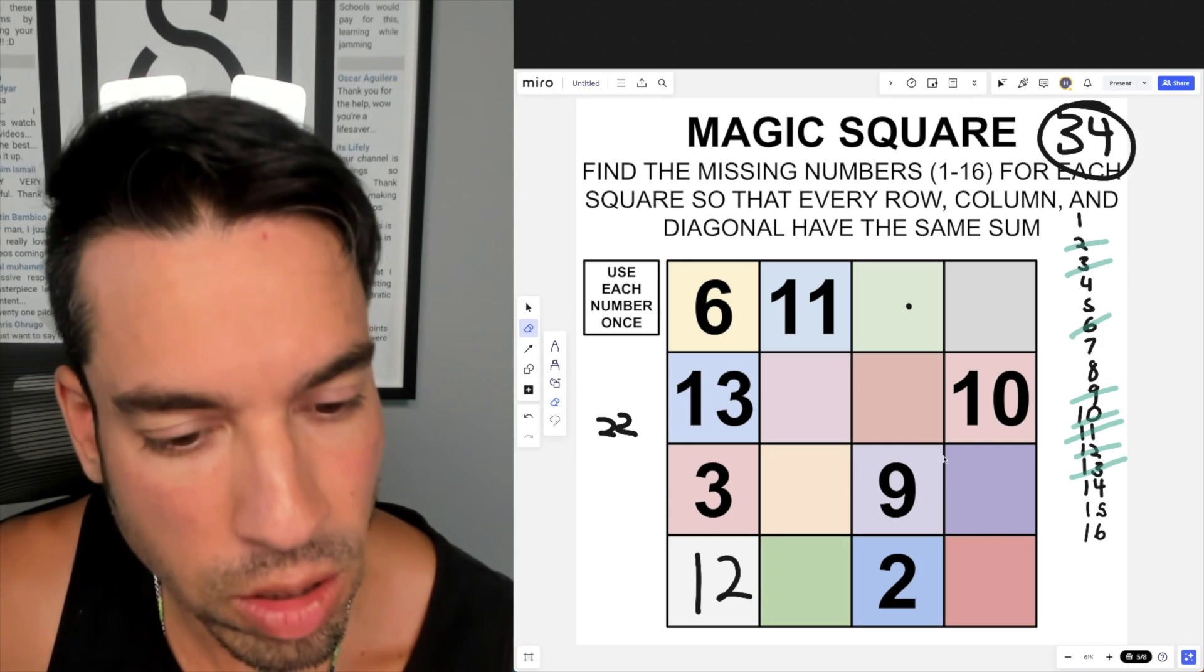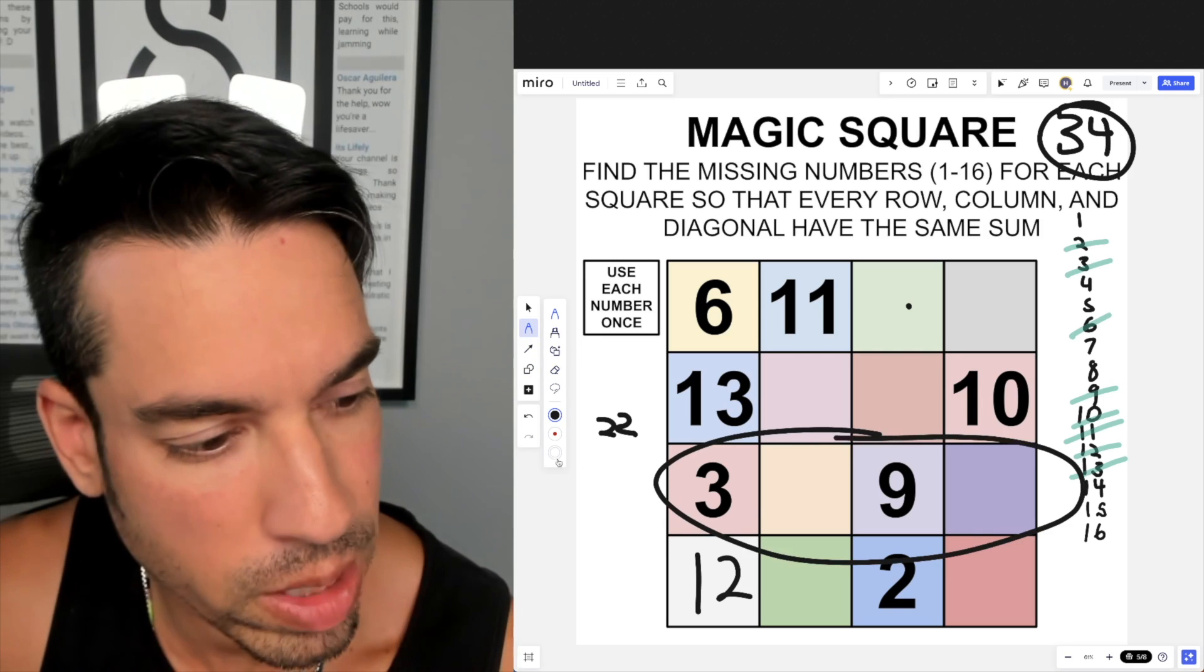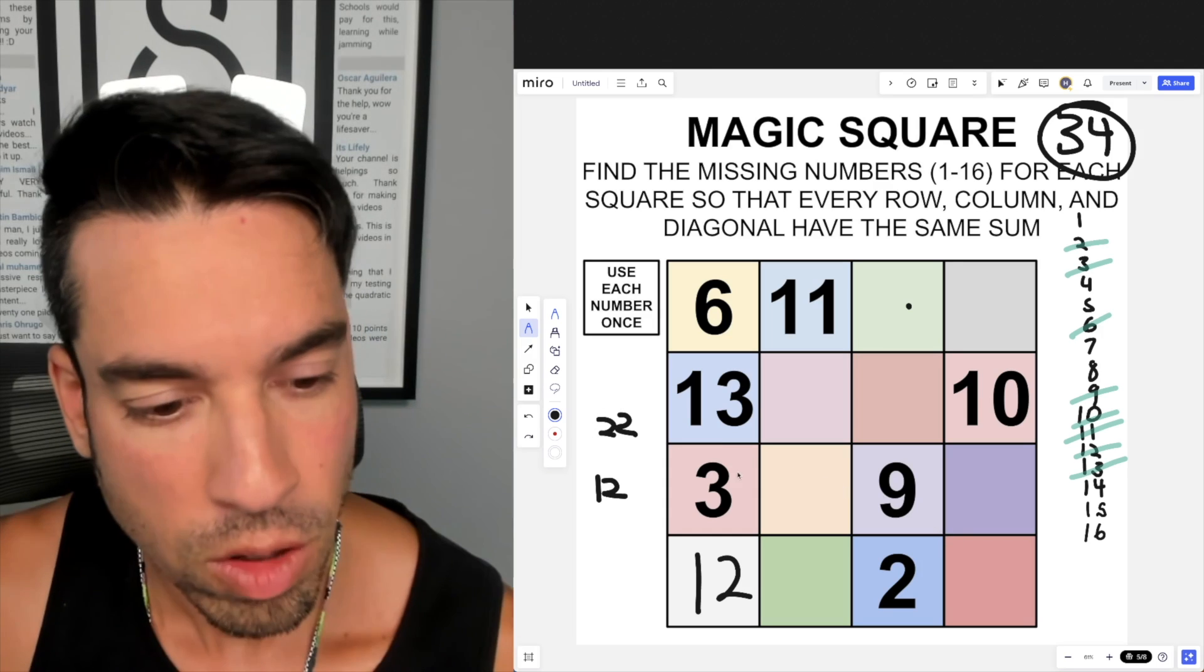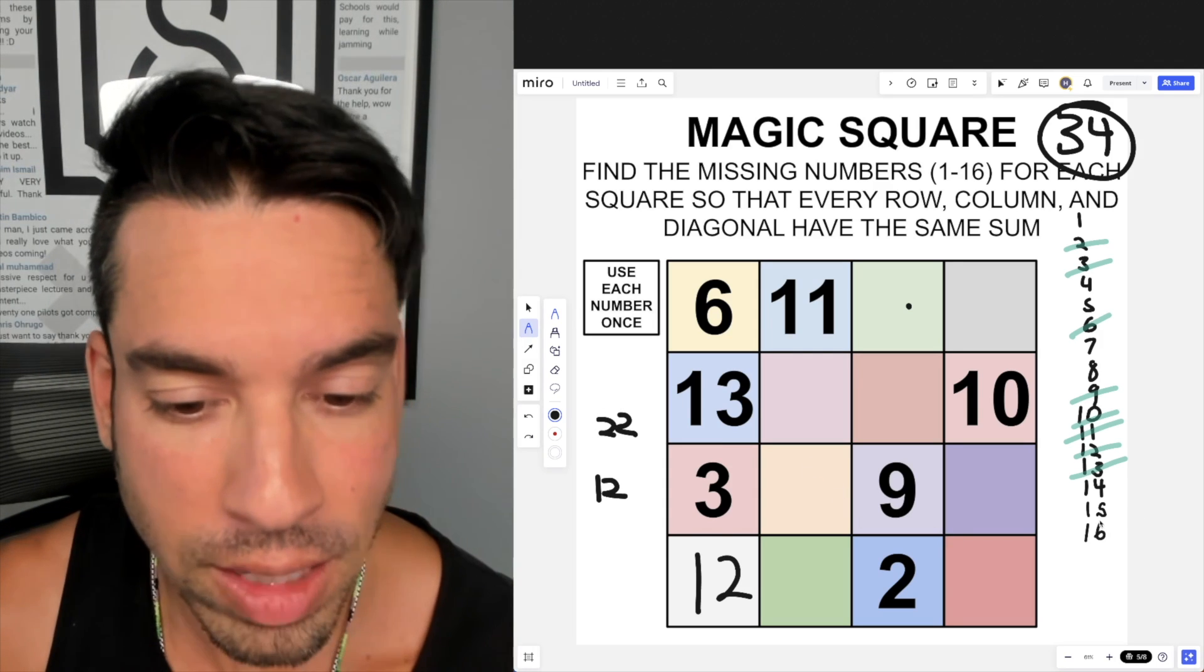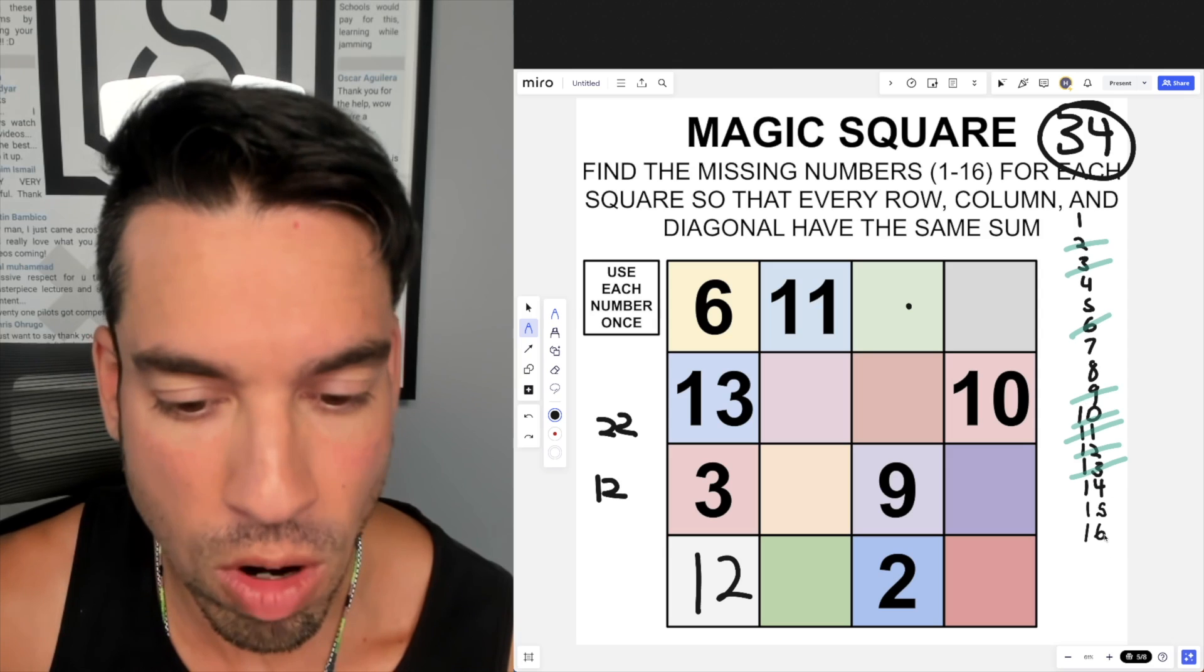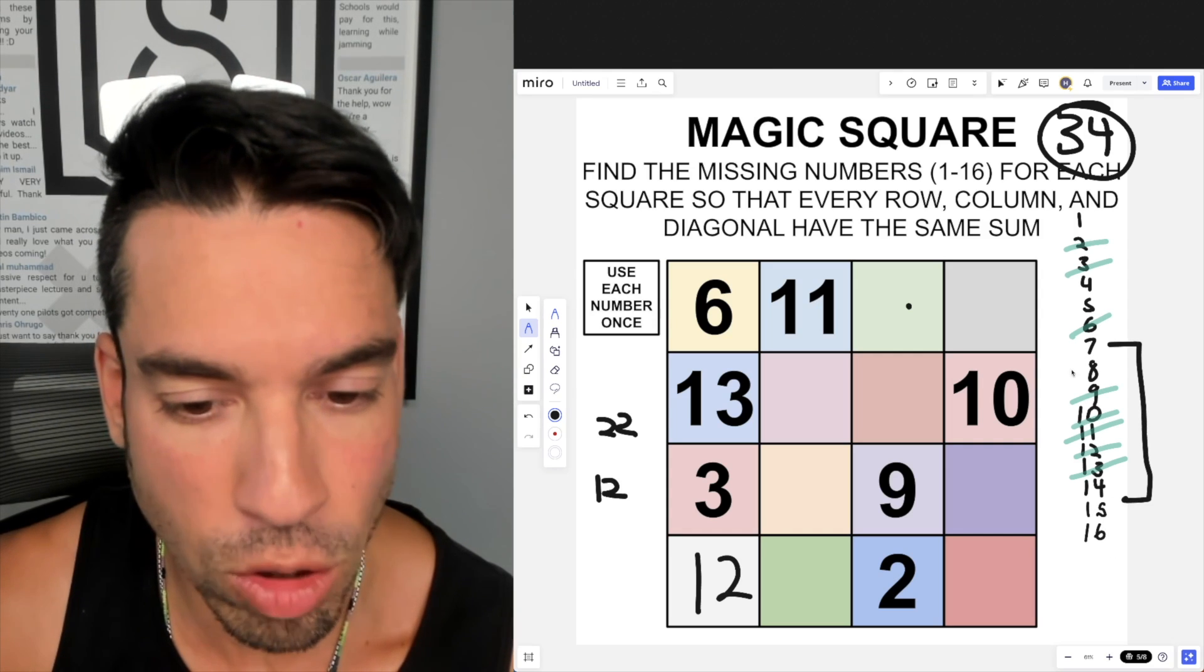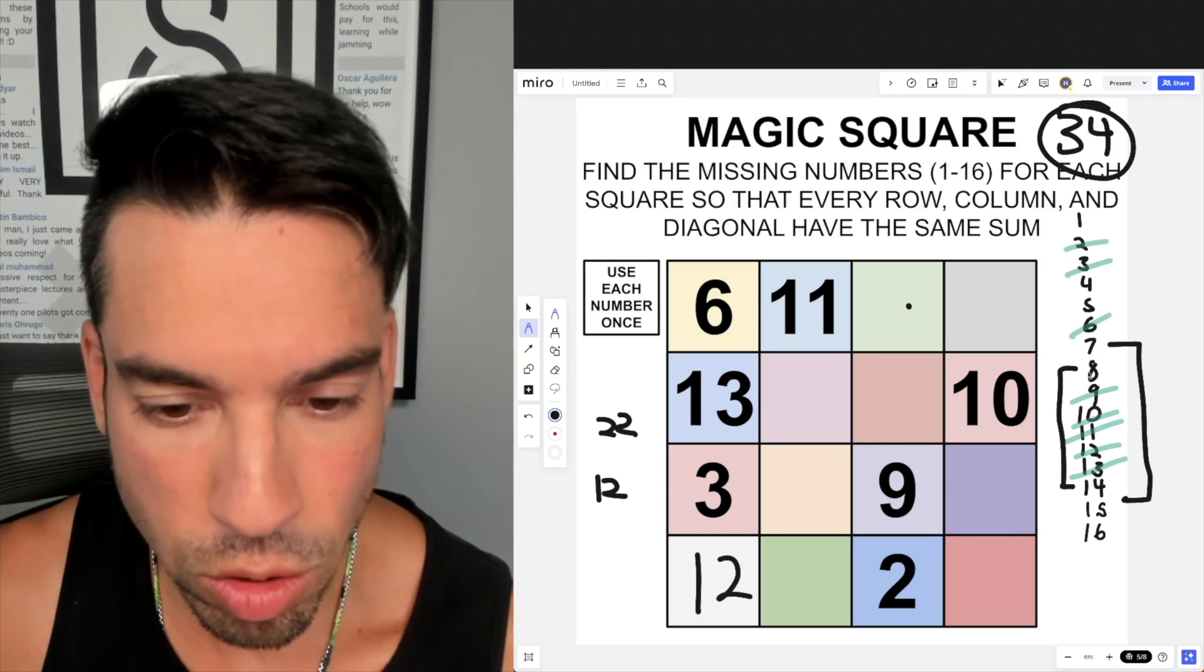Now the next place I'm going to look is this row right here with 3 and 9, because I know that 3 and 9 add up to 12. So to get to 34, I'm missing 22. So if we're trying to get up to 22 in two spots, I don't have many options. I could say 16 and 6, but 6 is gone. I could say 15 and 7—those are possible viable options. I could also say 14 and 8. After that we don't have many options, so we're going to say it's one of those two: it's either 14 and 8 or 15 and 7.